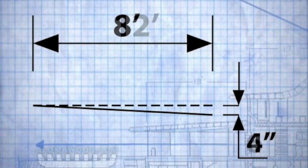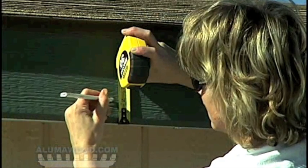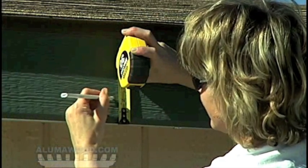Check your local building codes for minimum headroom under the header, usually 6'8". Take this into account when determining the height of the house.